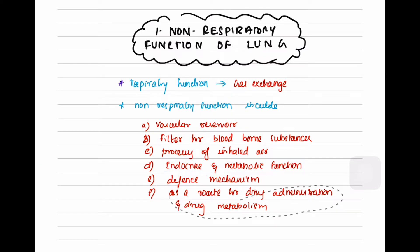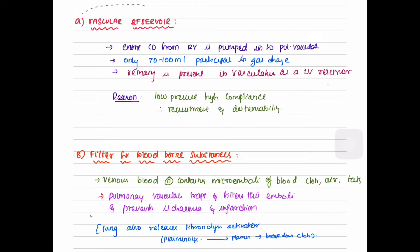Role of lung as a vascular reservoir: Entire cardiac output from the right ventricle is pumped into the pulmonary vasculature. Out of the entire cardiac output, only 70 to 100 ml participate in gas exchange. The remaining blood volume is present in the vasculature as a left ventricle reservoir. This is because of the low pressure and high compliance system resulting in recruitment and distensibility.